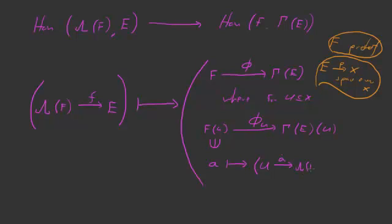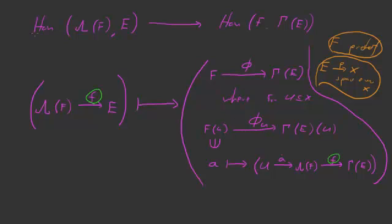So that's how we define the functor morphism: the map f gets carried to this φ, which is defined as follows — we pick an element a inside of F(U), and it gets taken to this section. So for a inside of F(U), this is what it gets taken to. That's all I want to say about this direction — this is the easier one to define.